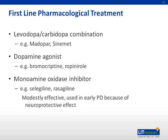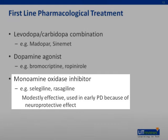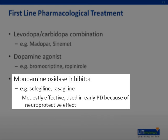First-line treatments for Parkinson's disease include L-DOPA replacement with levodopa-carbidopa combination, dopamine agonists, and monoamine oxidase inhibitors. Levodopa-carbidopa combination and dopamine agonists are both effective for rigidity and bradykinesia and can be used in combination. Dopamine agonists are recommended as first-line therapy in patients below 65 years old, as they are associated with fewer motor fluctuations, less dyskinesia, and can delay onset of levodopa therapy. Monoamine oxidase inhibitors are used as add-on therapy in early Parkinson's disease and have neuroprotective effects.